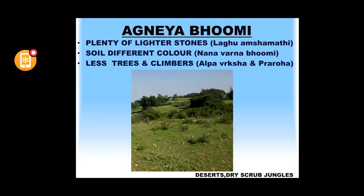Third is the Agni Bhumi. Here you can see plenty of lighter stones — Laghu-Amsha-vati — and the soils are Nana Varna, multi-colored. Looking at the flora, it is Alpa Vriksha: very restricted growth with more shrubs, and plants spreading prostrate or offset-like on the ground surfaces. If you take two stones from that area and crush them together, they break very fast. If you wash some sand in water, you see multiple colors — yellow, red, black, white. This is the Agni Bhumi, comparable to desert dry scrub jungles.